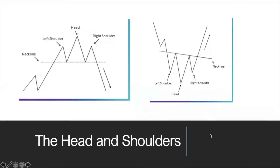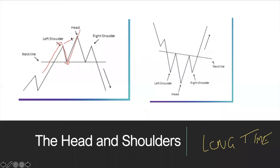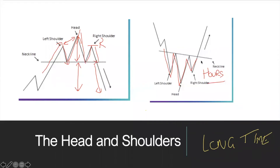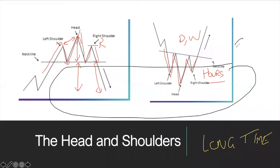Head and shoulders is a very tricky pattern because it takes a long time to form. Prices have to go up to the left shoulder, pull back, push up higher to form the head, pull back again, then form a right shoulder lower than the head, and finally break the neckline downward by a distance equivalent to the height of the head. On the daily chart this can take many many days, but when the pattern completes it is extremely powerful.